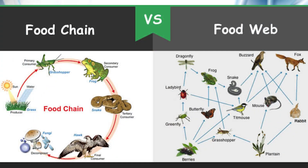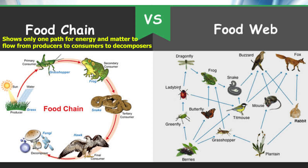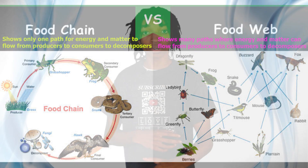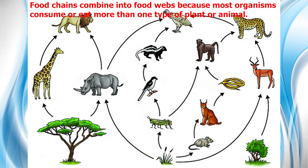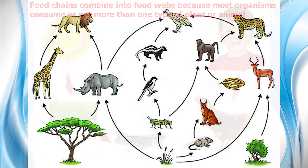Before we dive into food chains, it is important to go over the difference between food webs and food chains. A food chain shows only one pathway for energy and matter to flow from producer organisms to consumers and then to decomposer organisms. A food web shows many pathways for energy and matter to flow from producers to consumers and then decomposer organisms. Think of a food web as many different food chains combined together, because most organisms consume or eat more than one type of plant or animal.